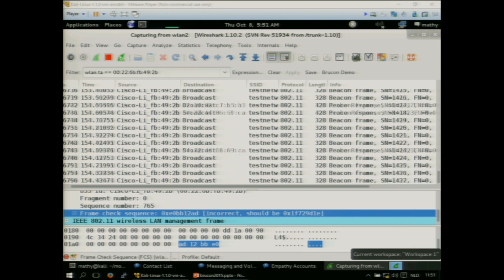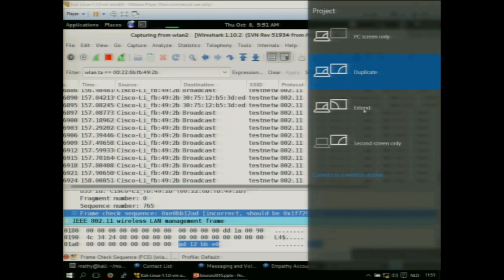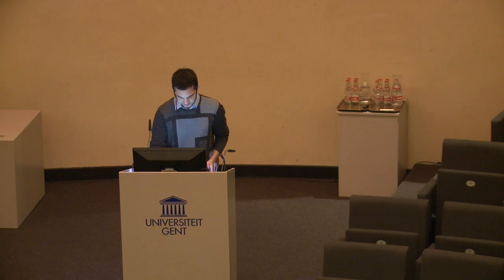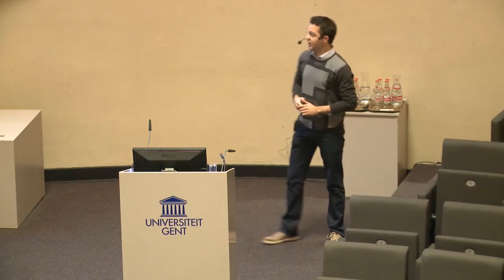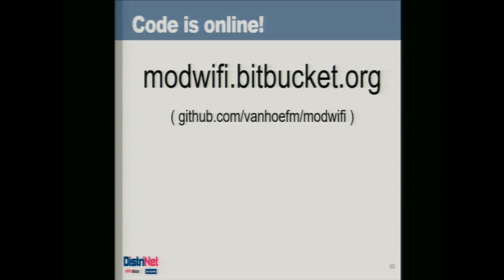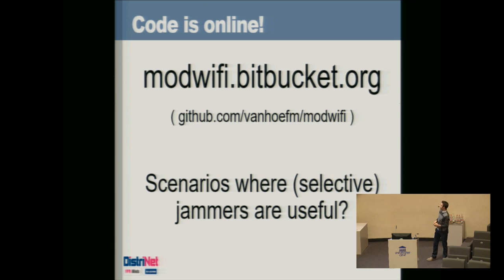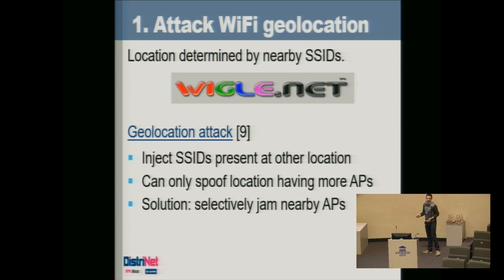That covers the demo. The code for this reactive jammer is available online — you can visit the website for a downloadable virtual machine with everything pre-installed, as well as a link to the source code. Some additional applications include attacking Wi-Fi geolocation by injecting your own SSIDs and jamming nearby SSIDs, or selectively jamming rogue access points.